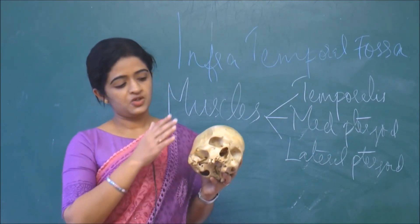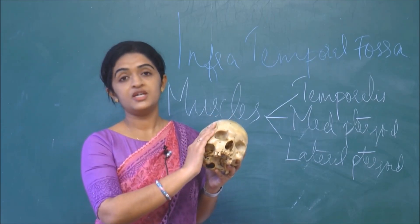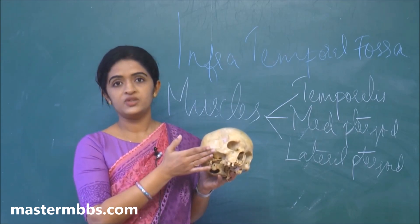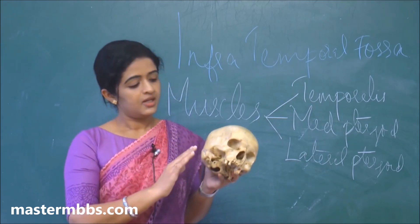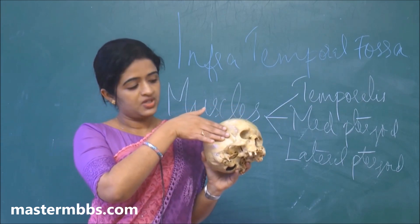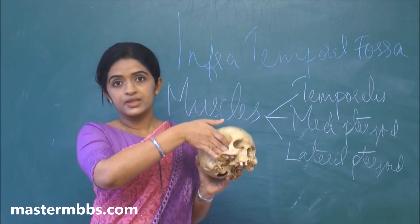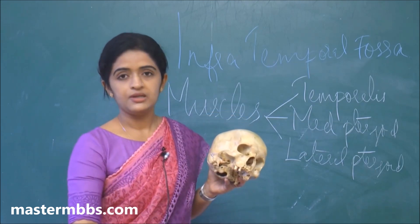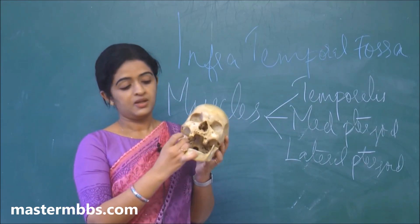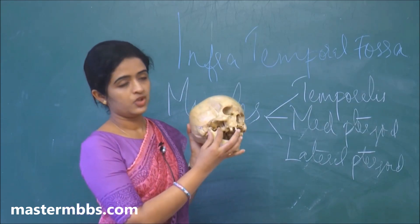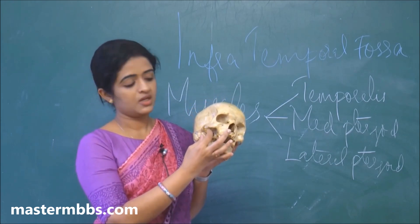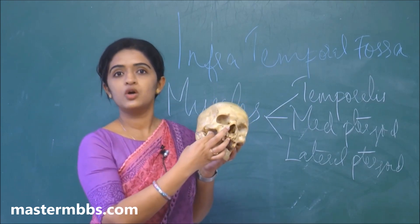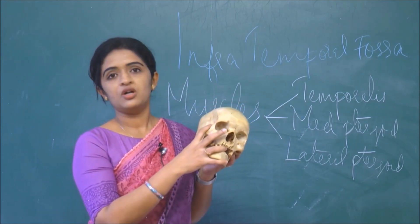The temporalis muscle is seen filling the depression of the temporal fossa, which lies just above the zygomatic arch. What happens is that the temporalis muscle comes under the zygomatic arch, forms a tendon, and gets inserted onto the mandible — specifically onto the coronoid process. So the tendon comes under the zygomatic arch and inserts onto the coronoid process — that is the temporalis muscle.